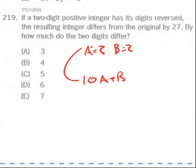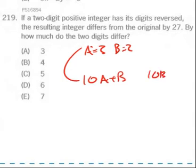Then they say they'll reverse the digits. So that's now 10B plus A. Now it's 23, I switched them around. And that difference between those two numbers is 27.